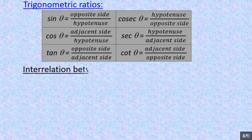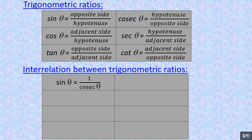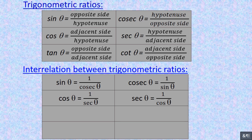The reciprocal relationships: sin θ = 1 / cosec θ, cosec θ = 1 / sin θ, cos θ = 1 / sec θ, sec θ = 1 / cos θ, tan θ = 1 / cot θ, cot θ = 1 / tan θ.